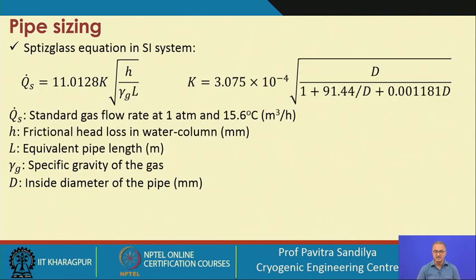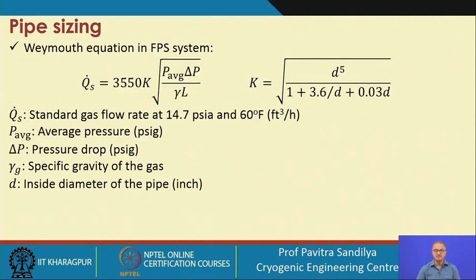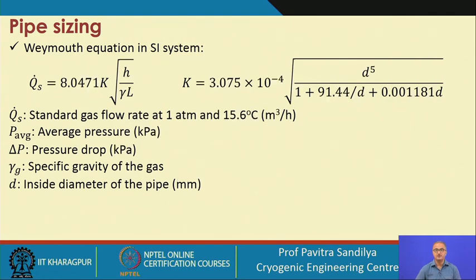In SI units, the same Spitzglass expression and the Weymouth equation can be used to find capacity. The Weymouth equation is used for higher flow rates and the Spitzglass equation for lower flow rates — these are the FPS and SI system versions respectively.